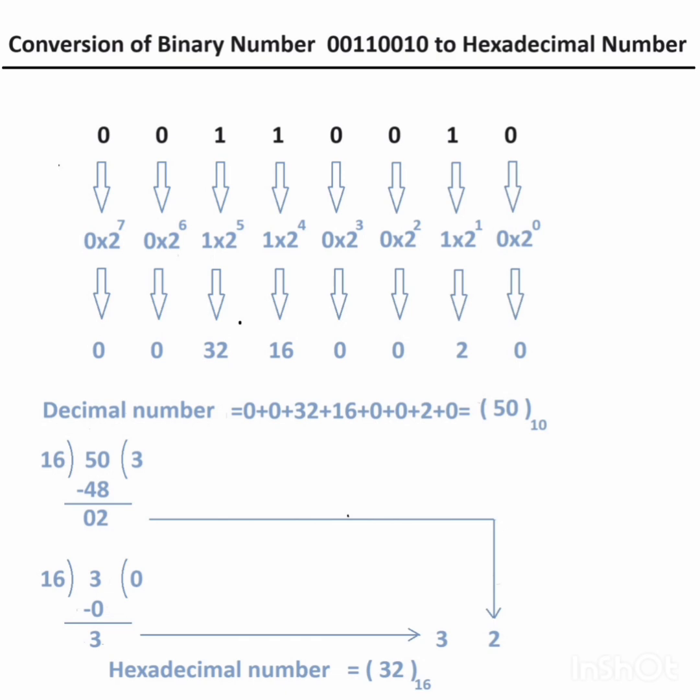Then we have to convert 50 into a hexadecimal number. For this, we will divide 50 by 16, so the remainder is 2 — this is the first hexadecimal digit from the LSB side — and the next remainder is 3. So the hexadecimal number is equal to 32.